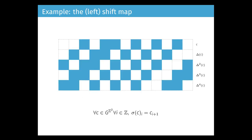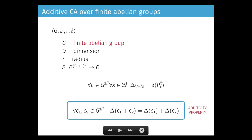Applying a specific CA, for example the shift map — which just shifts the content of all cells one cell to the right — I can obtain pictures like this. The initial configuration is at the top. The point is that people would like to decide dynamical properties of these space-time diagrams, but there is a general result which says that any non-trivial property is in fact undecidable.